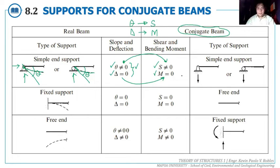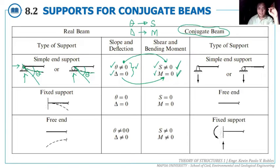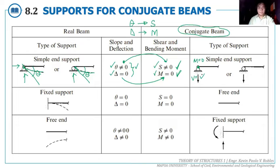What type of joint has non-zero shear but zero moment? That would be a simple support — hinge or roller. At a simple support, the moment is zero and there is a shear force (the reaction). Therefore, when you have a hinge or roller on the real beam, the corresponding conjugate beam support is the same — a roller or hinge.